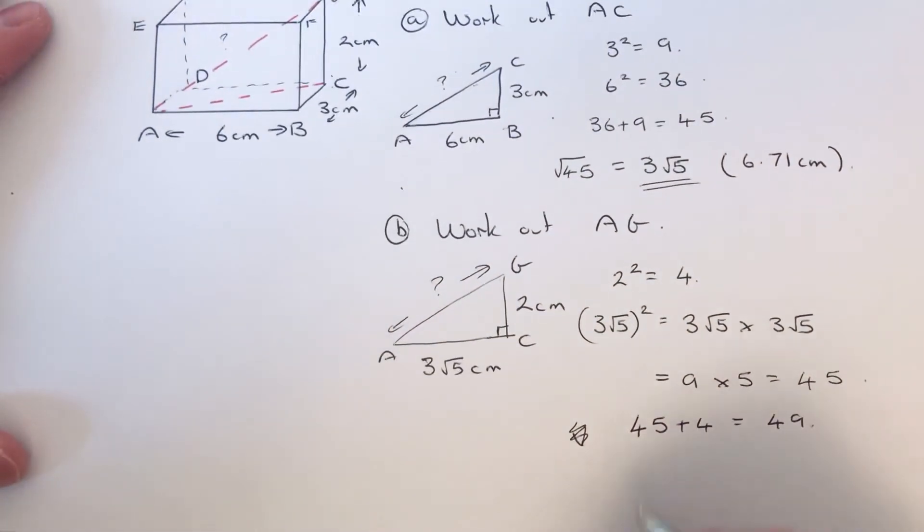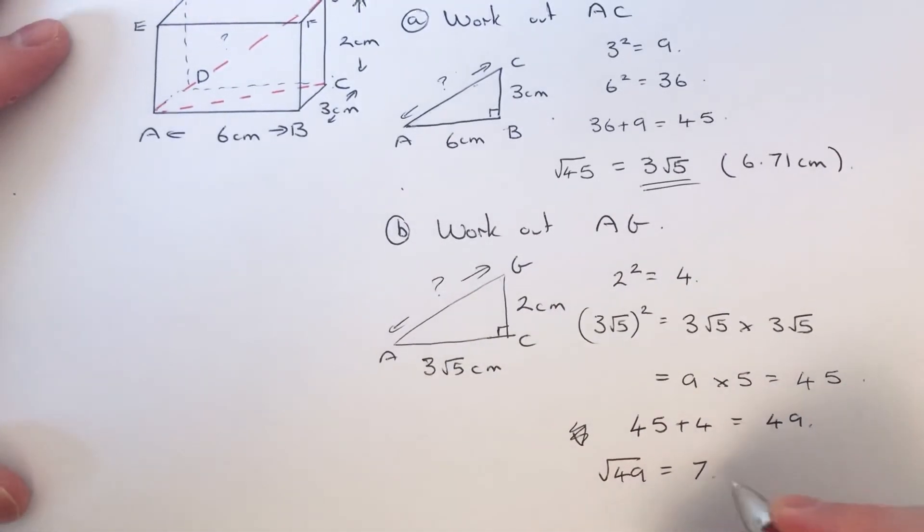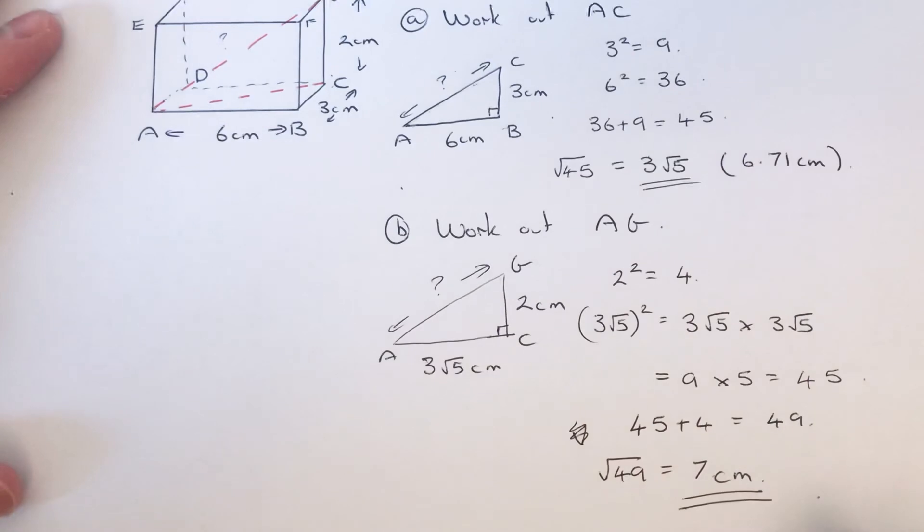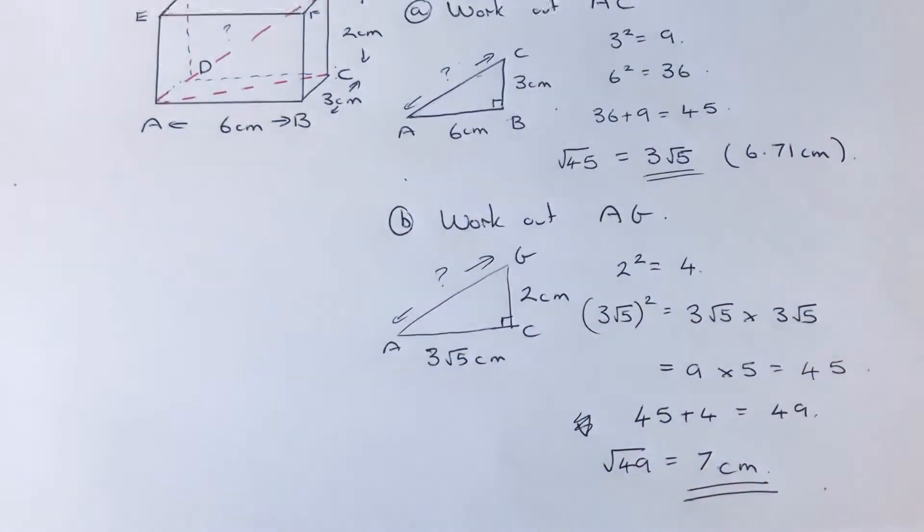Then we square root that answer, so square root of 49 is 7. So AG is 7 centimeters. I hope you liked this video. If you did, make sure you like and subscribe, and thanks for watching guys, bye bye.